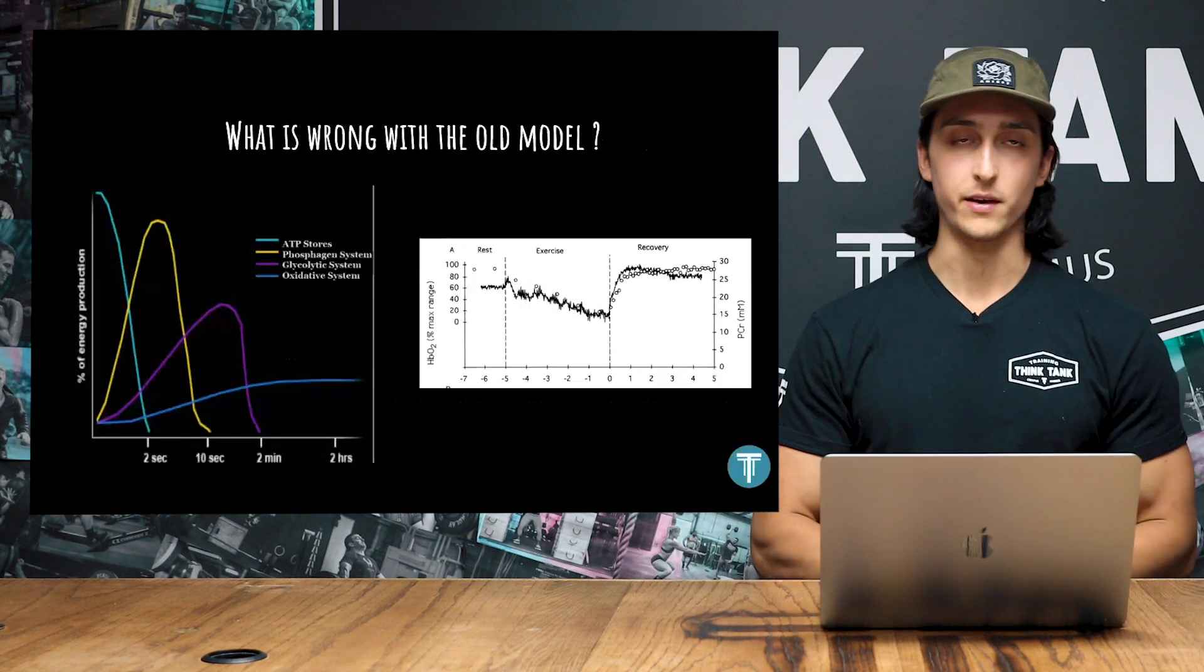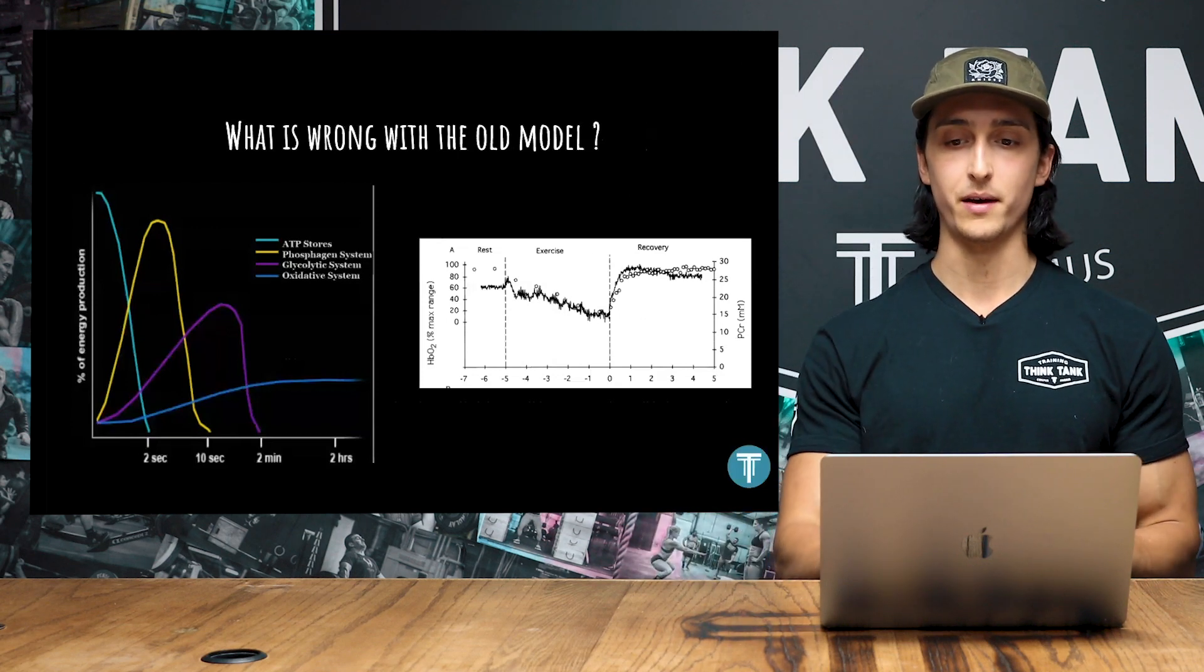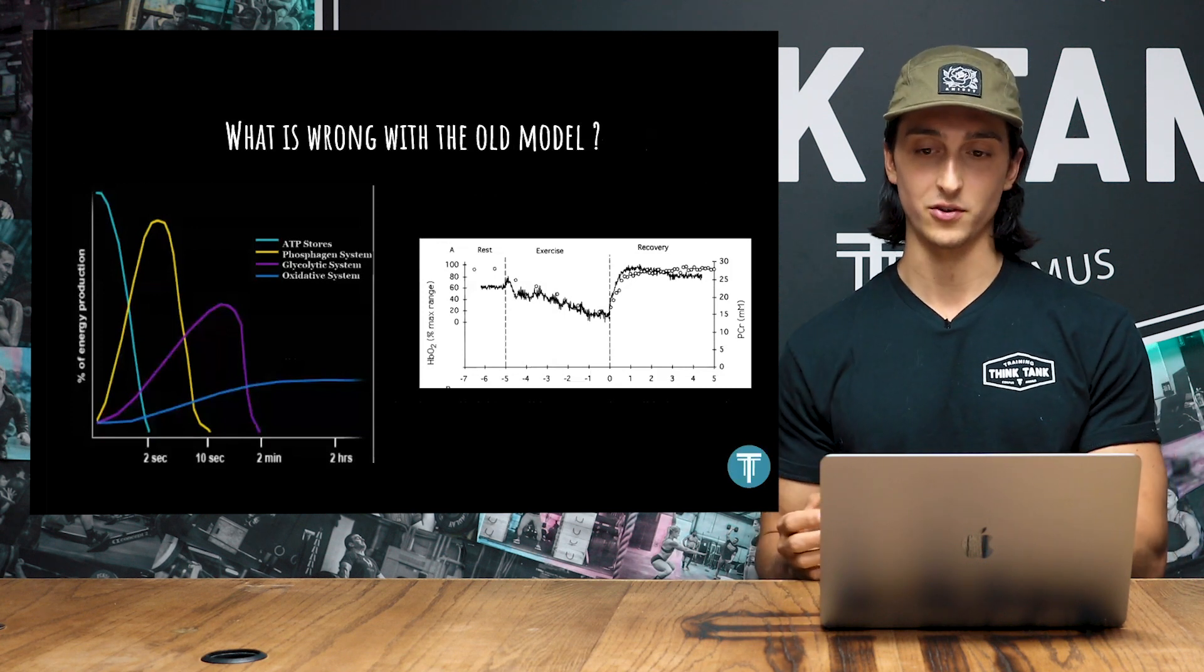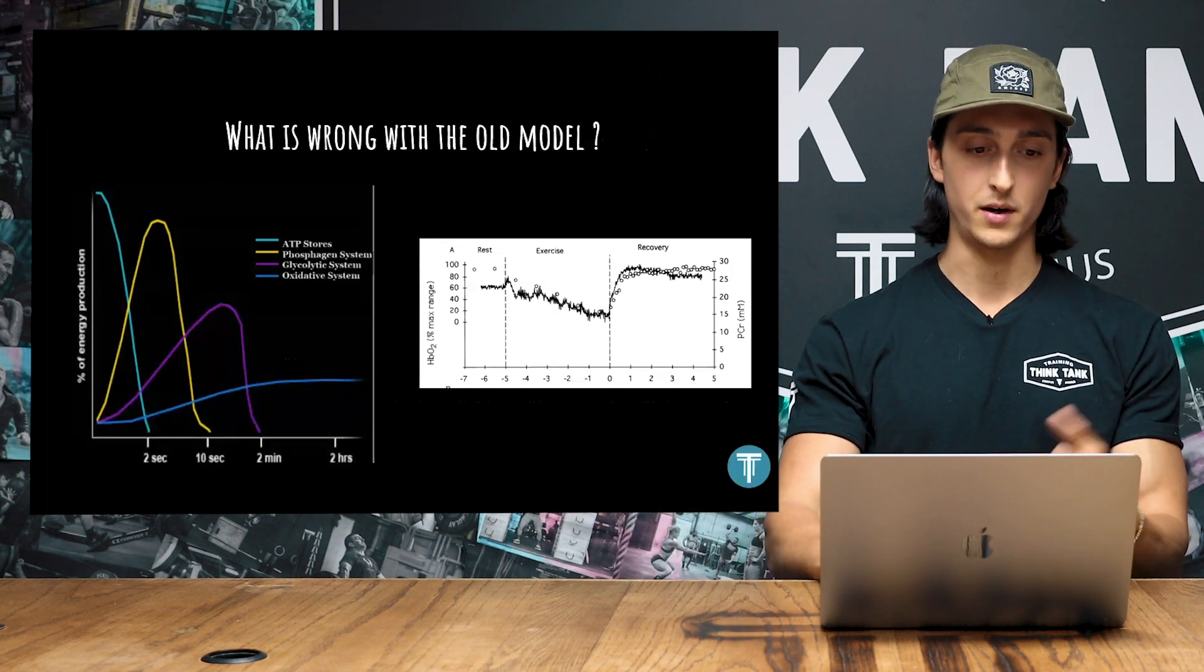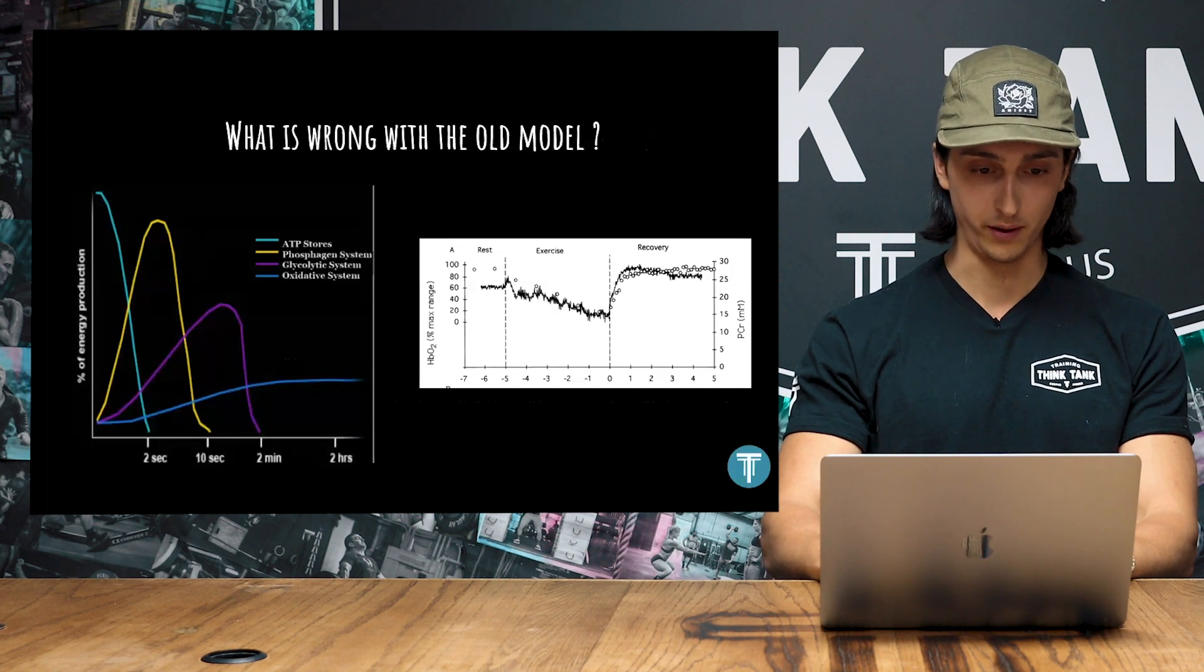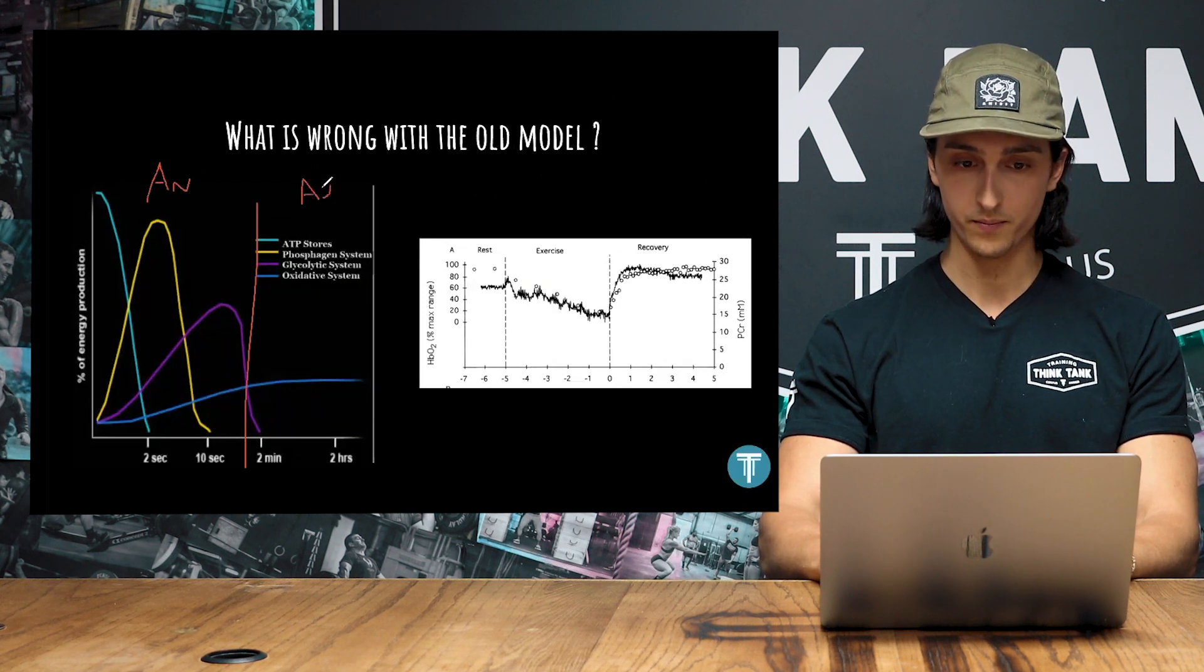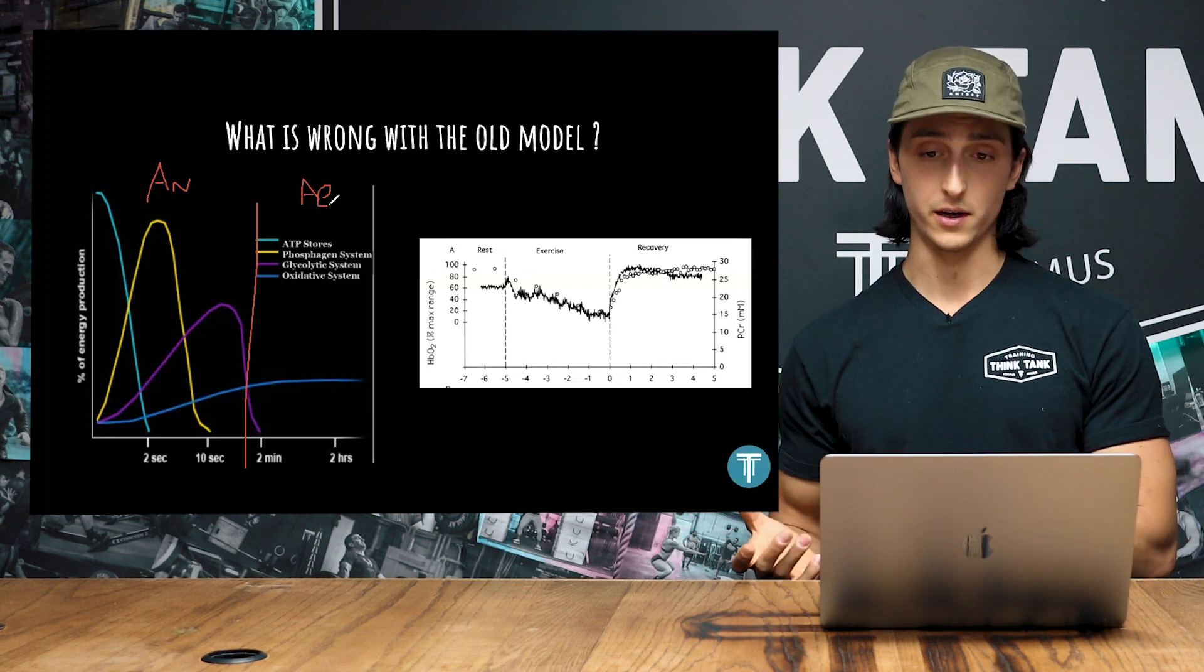First, we'll start with this classic model of energy system training. A lot of times in discussions about energy systems, coaches and people make these hard distinctions between two models of energy production. We have anaerobic, and we have aerobic on the other hand. If we're looking at this model on the left here, they could split it right down the center, and they'll say this is anaerobic, and this is aerobic. The former, anaerobic, they break down into the phosphagen and glycolytic pathways.